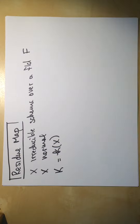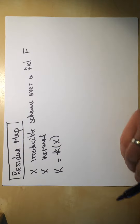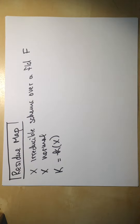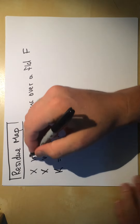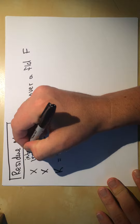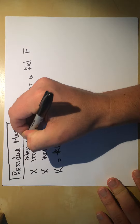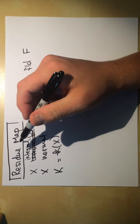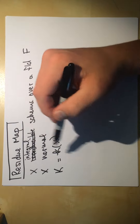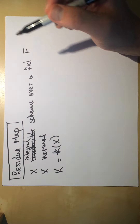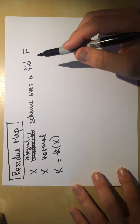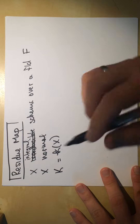Using the topology of schemes: to every point in the scheme there's an irreducible sub-variety given by the closure of that point. Actually the correct term is integral — meaning the coordinate rings are domains — rather than just irreducible.